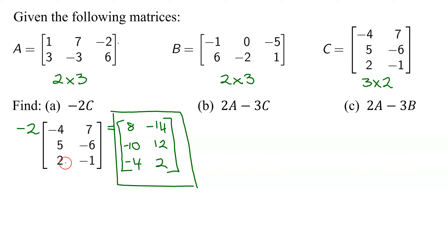Please note: C is a three-by-two matrix, and negative two C also has three rows and two columns — it is a three-by-two matrix. So scalar multiplication does not change the order or dimensions of your matrix.